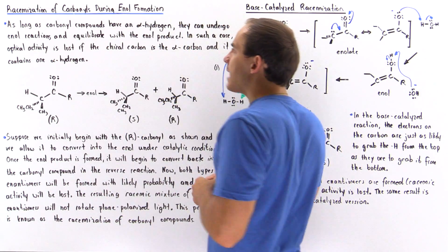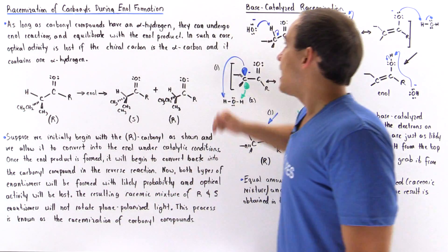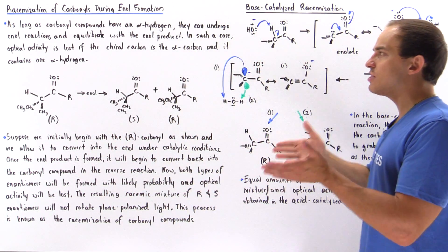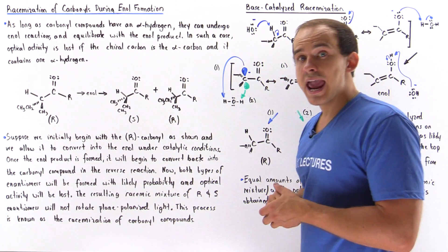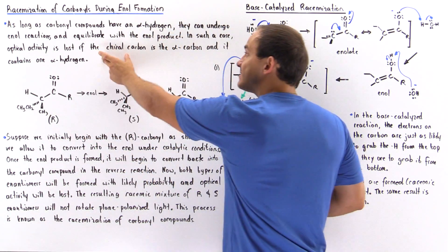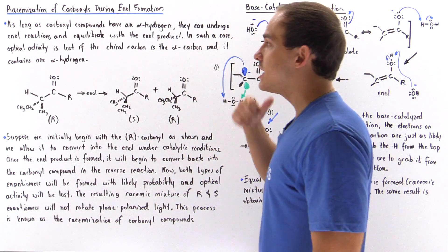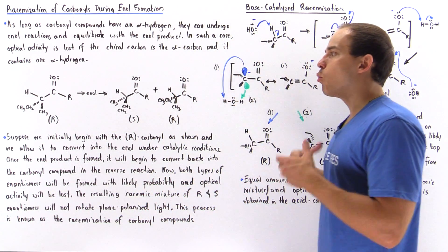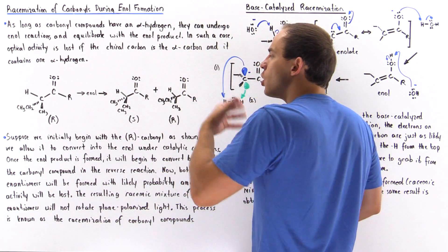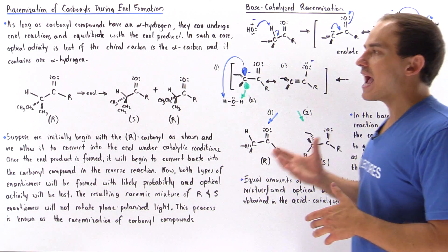As long as carbonyl compounds have an alpha hydrogen, they can undergo enol reactions and will eventually equilibrate between the enol product and the carbonyl reactant. In such a case, optical activity will be lost, as long as the alpha carbon is the chiral carbon and contains one hydrogen atom — one alpha hydrogen. So the question is: why does this racemization reaction take place when the enol is produced?